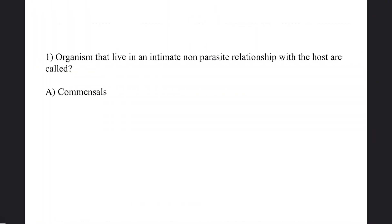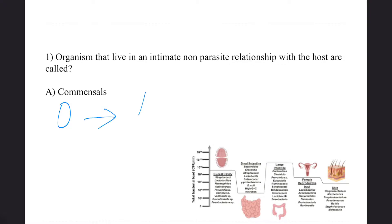First question: Organisms that live in an intimate non-parasitic relationship with the host are called? Answer is commensals. In this association, one member gains benefit whereas the host is neither benefited nor harmed.